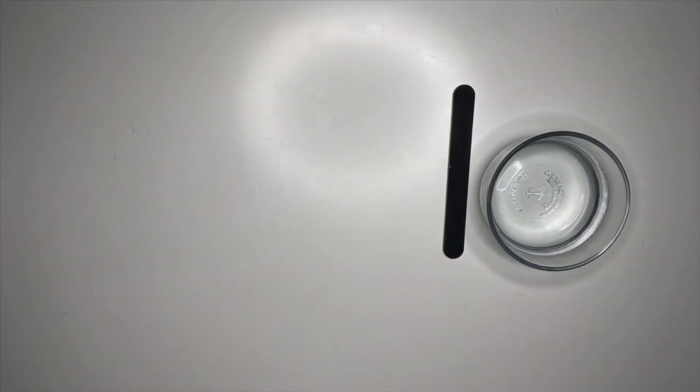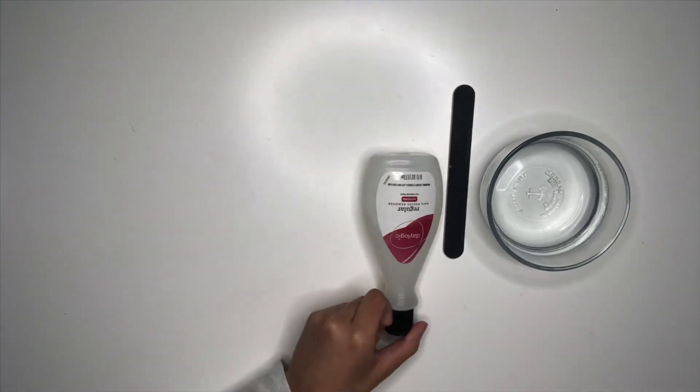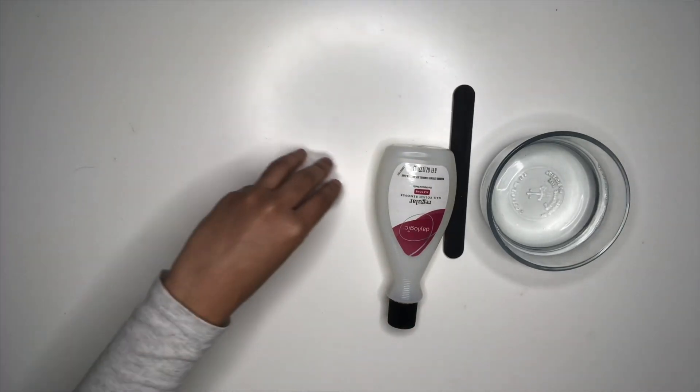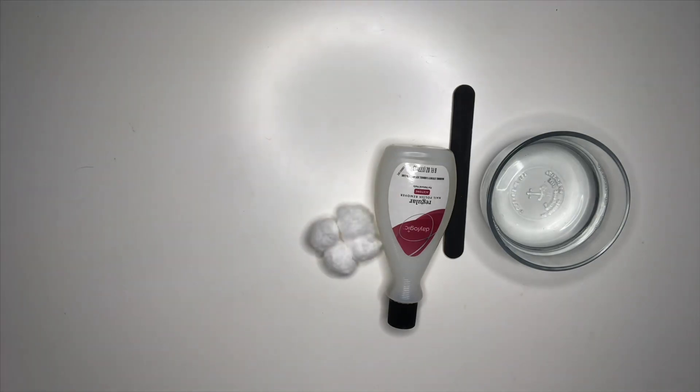All right, so there are going to be a couple of things that you're going to need for this video. You're going to need a bowl of water, nail polish remover, a nail filer, some cotton balls, nail polish of your choice, a nail clipper, and some nail glue, and of course the most important part, the press-on nails.